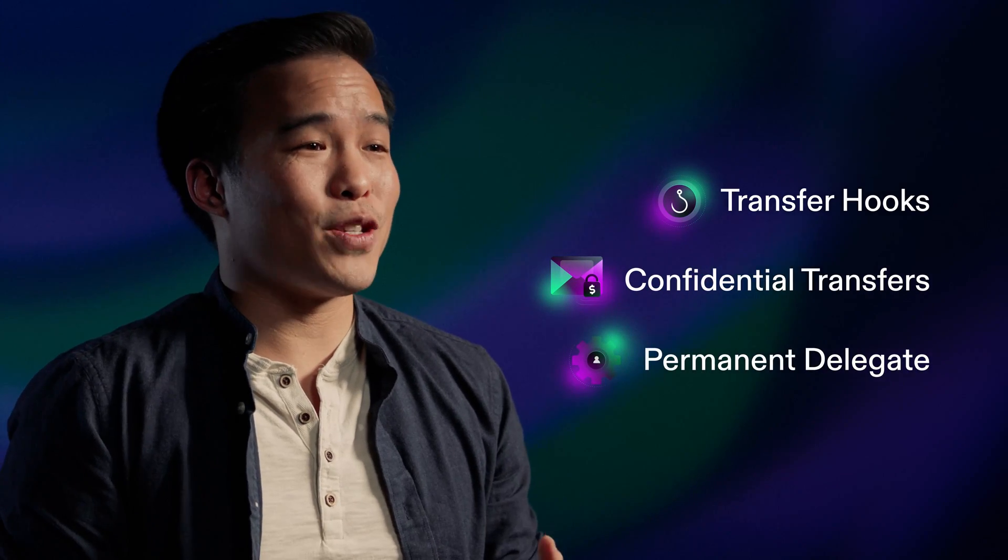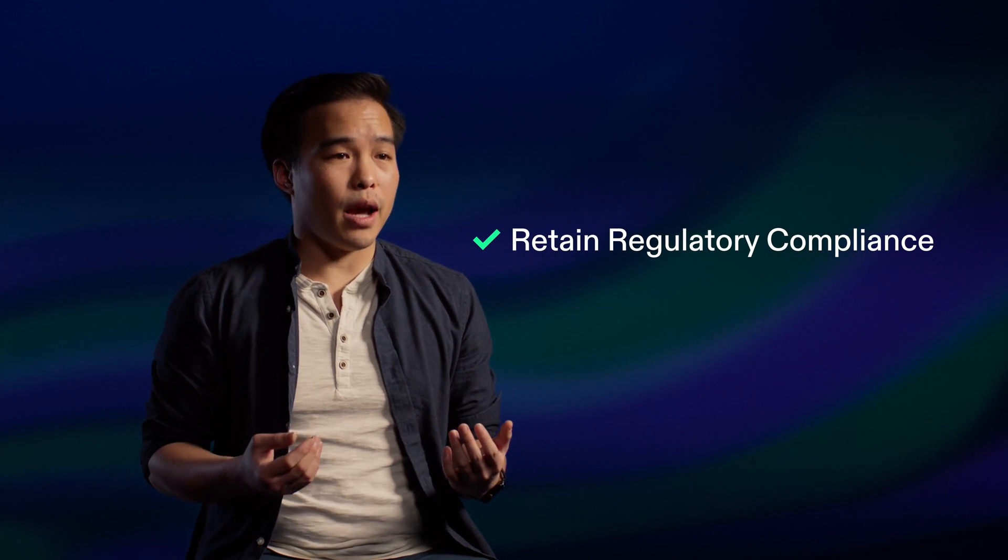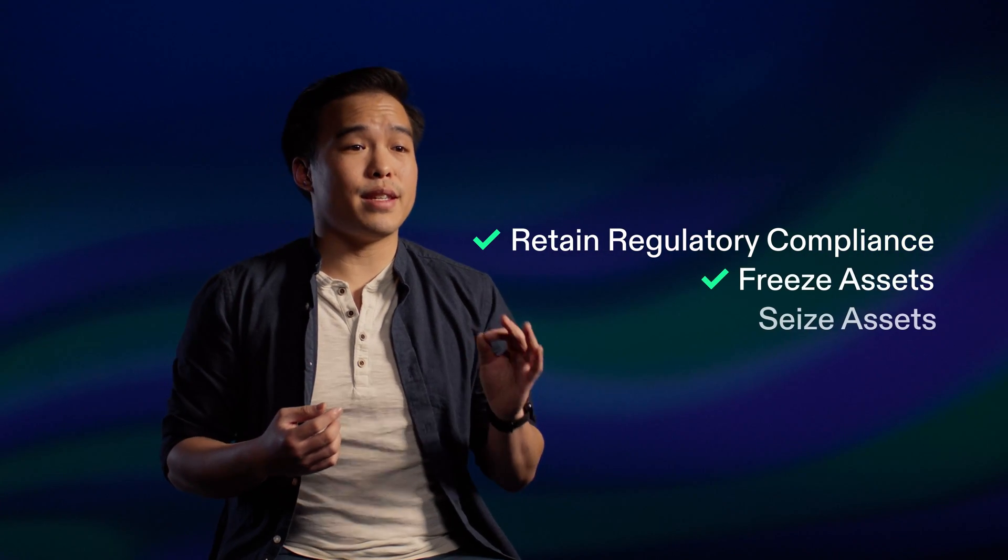Transfer hooks, confidential transfers, and permanent delegate extensions strike an elegant balance between maintaining privacy and self-custody. Token extensions provide tools for issuers who want to retain regulatory compliance and the ability to freeze and seize assets that have fallen into the wrong hands. Combining transfer hooks and confidential transfers provides the ability to create permissioned tokens within the confines of a permissionless network, something businesses looking to adopt blockchain have requested.